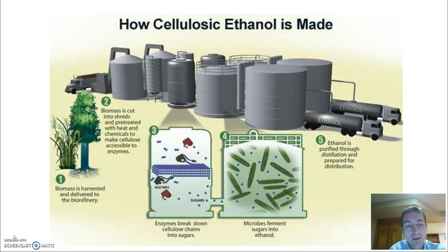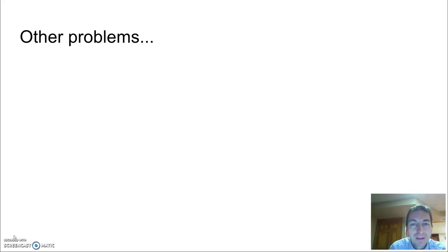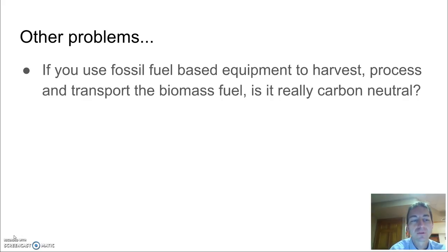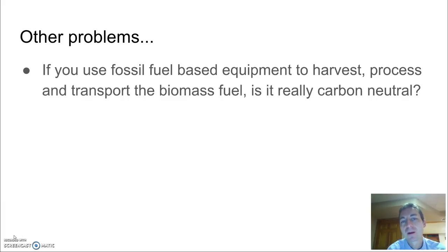The downside is cost — it's going to cost more and be more involved to do those additional steps of breaking it down to get the fuel made. Another issue with biomass is whether it's actually carbon neutral. If we're harvesting our crops with fossil fuel-based equipment and transporting and processing them using fossil fuel-based equipment, then we're actually going to be putting more carbon emissions into the atmosphere than we're taking out in the process of growing the plants and producing new biofuels.